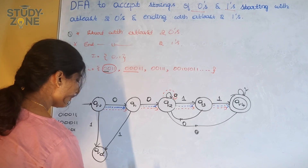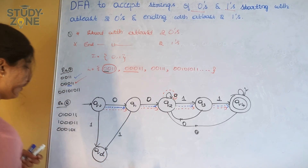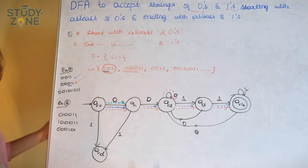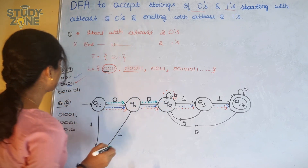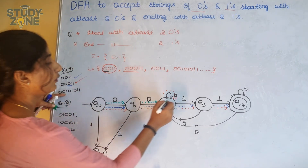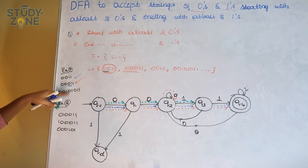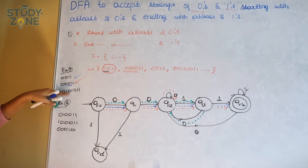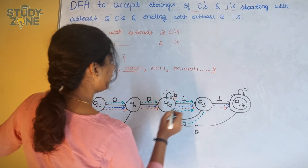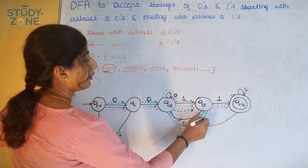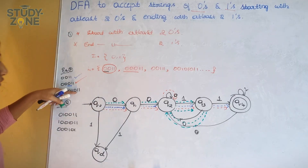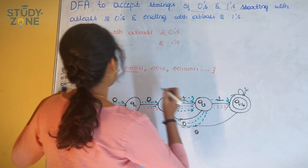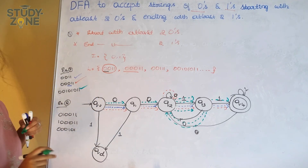Now the third accepting example: zero zero one zero one zero one one. q0 on zero → q1, q1 on zero → q2, q2 on one → q3, q3 on zero → q2, q2 on one → q3, q3 on zero → q2, q2 on one → q3, q3 on one → q4. The string gets accepted.